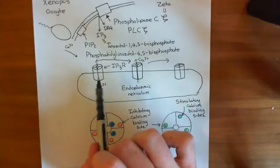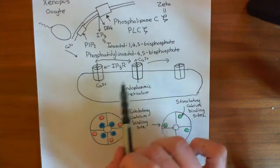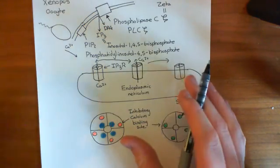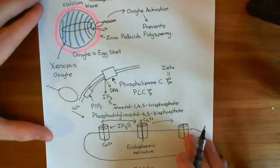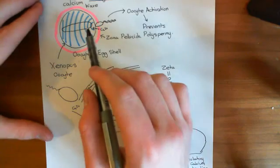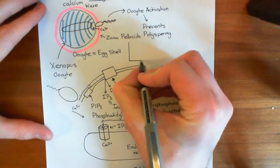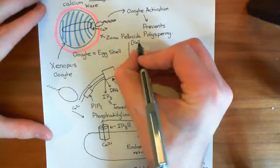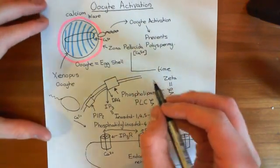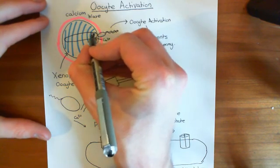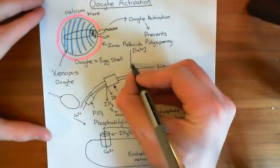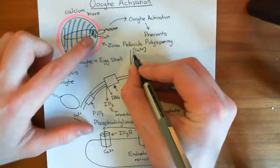Another important point is that you don't just keep the IP3 receptors open continuously. It is a calcium wave, meaning not only does the signal need to propagate forward, but the IP3 receptors behind need to close. To illustrate this, if we plot calcium concentration against time for multiple points along the oocyte, what we see is that at point 0.1 in the cell, you get a fairly rapid calcium rise as the endoplasmic reticulum stores release calcium.